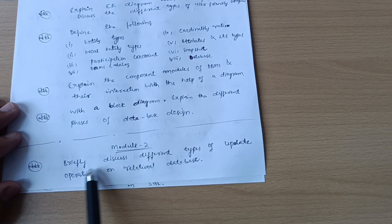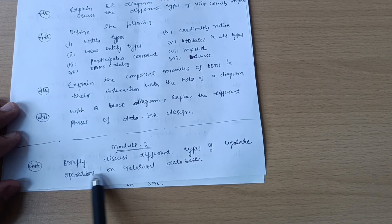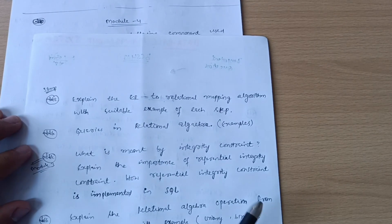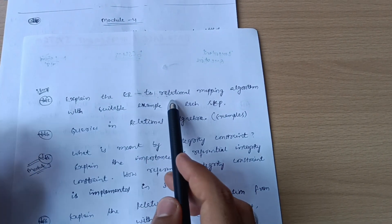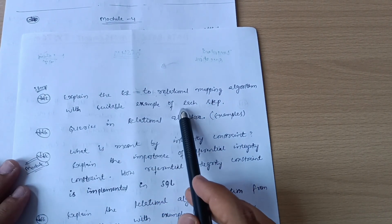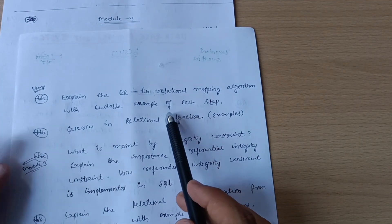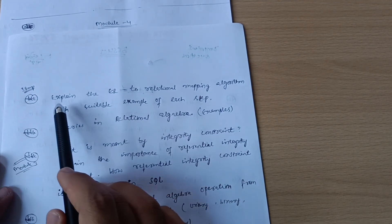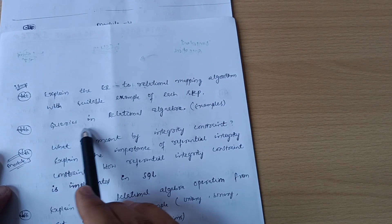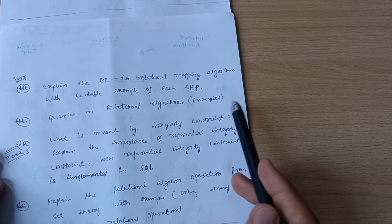Model 2: Briefly discuss different types of update operations on a relational database. Explain the ER to relational mapping algorithm with a suitable example of each step. This is a super important question that is frequently asked in VTU examinations. Next is queries in relational algebra examples - you have to practice by referring Paper 18CS53.